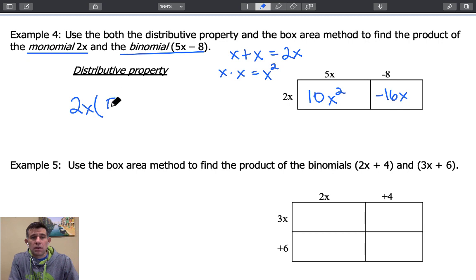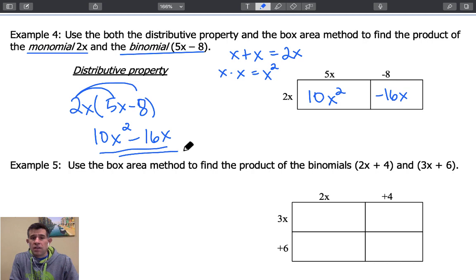Let's see what we would get if we use the distribution property. We have 2x times the quantity 5x minus 8. When we distribute that 2x to the 5x and the 2x to the negative 8, we're going to end up with the same product 10x squared minus 16x. So you can see the geometric representation here verifies that algebraic property of the distribution property.